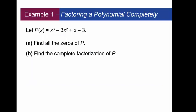Let's do an example so you can see what we're talking about here. Let p(x) be this polynomial: x³ - 3x² + x - 3. First I want to find all the zeros of p, and then once I find all the zeros, how can I use those to do the complete factorization of this polynomial?